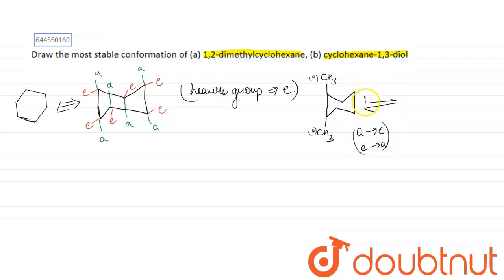What will happen in ring flip is this axial becomes equatorial and this one becomes here. So before it was axial-axial and now it is equatorial-equatorial.